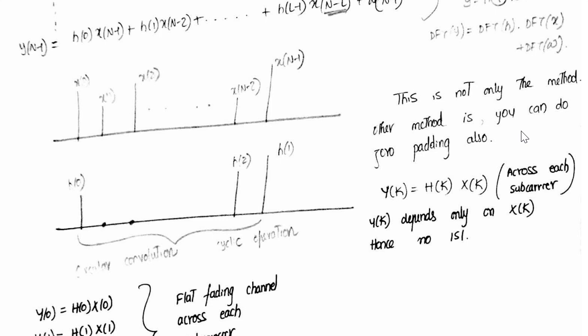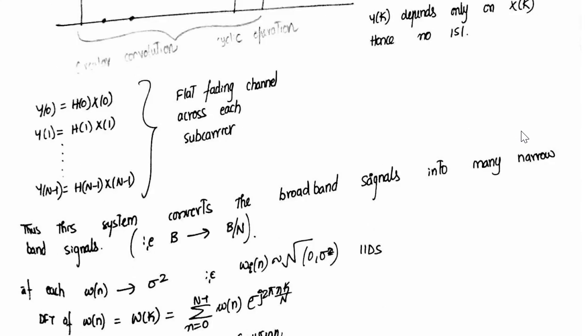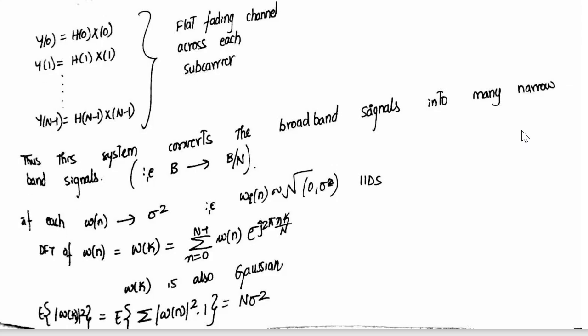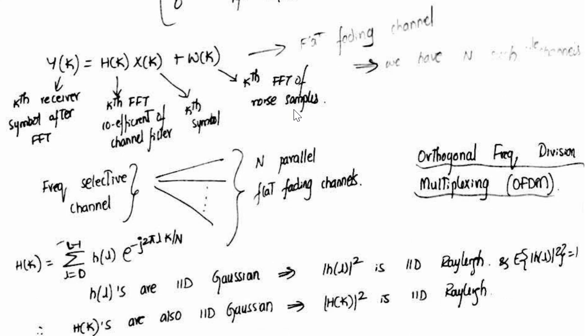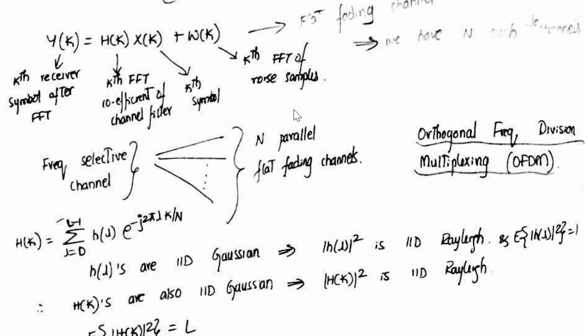Finally with the cyclic prefix included, it is demonstrated that the frequency fading channel is converted to flat fading channel across each subcarrier. Frequency selective channel is converted to N parallel flat fading channels.